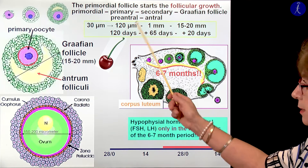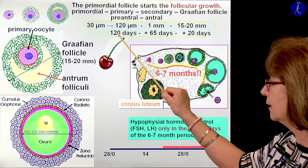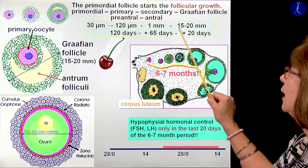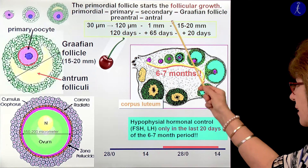About the size of the follicle: the primordial follicles are around 30 micrometers — a normal cell size. Then within 120 days (that's 4 months), it grows to 100 micrometers and has some granulosa cells around it. In the next 2 months, it grows to 1 millimeter. And in the last 20 days, it grows from 1 millimeter to 15–20 millimeters — the size of a cherry. This last phase is under hormonal control.